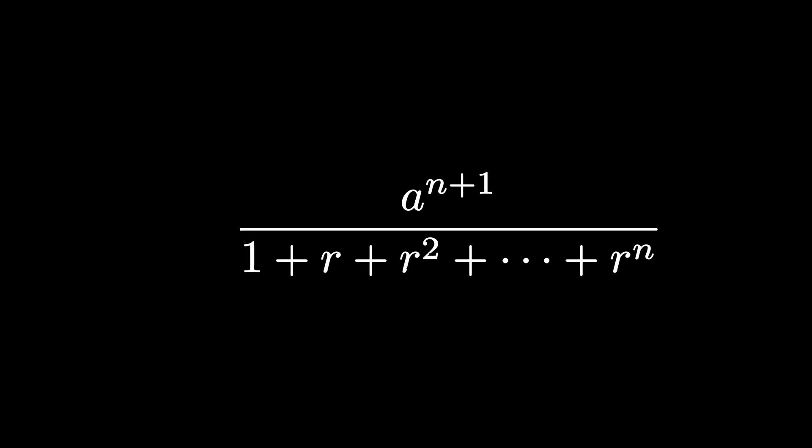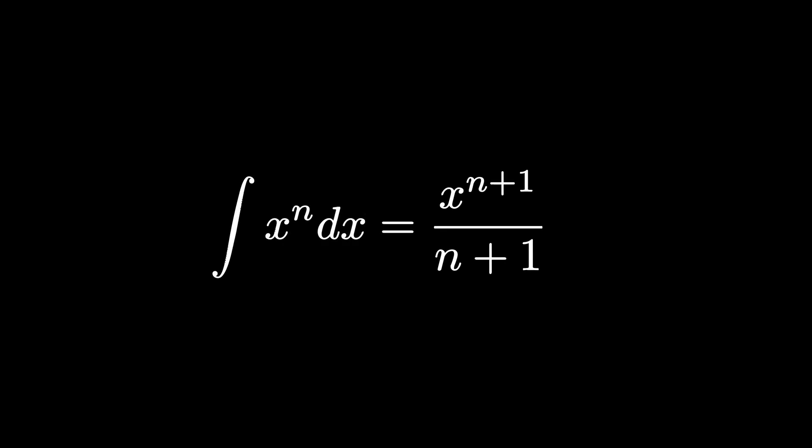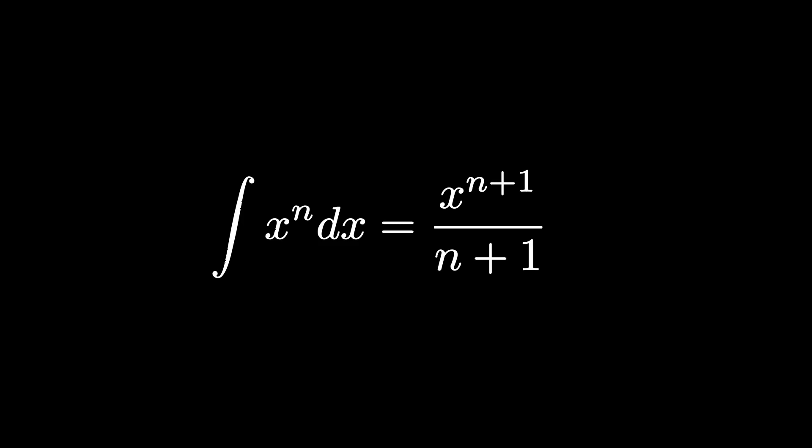Now, we can easily take the limit as r goes to 1, and we get a to the n plus 1 over n plus 1. Now, a is some chosen constant for our variable x, so if you want a formula for a general function, we get x to the n plus 1 over n plus 1. The antiderivative of x to the n. a to the n plus 1 over n plus 1 is just the integral from 0 to a of x to the n dx.